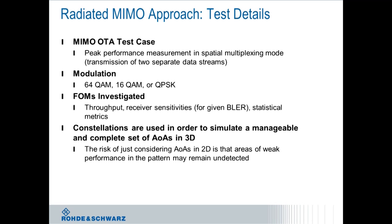We can use any of the modulation schemes imaginable: 64QAM, 16QAM, as well as QPSK. The actual figure of merit that we're looking at in this test is throughput, receiver sensitivities, as well as some statistical metrics because they correlate better to user performance or network performance.